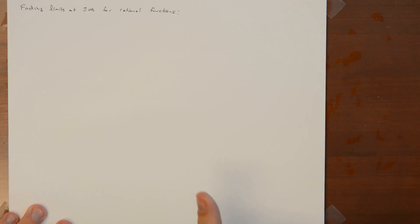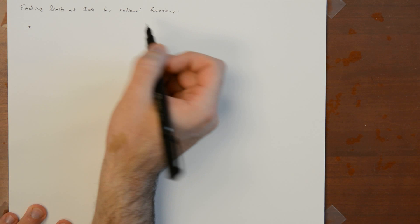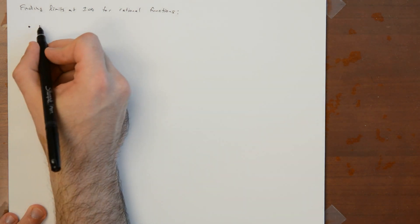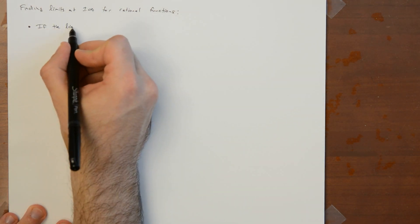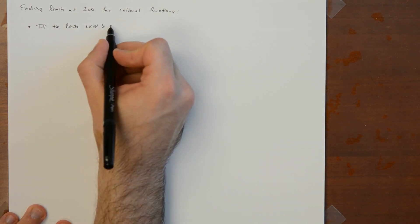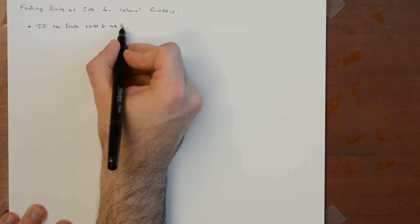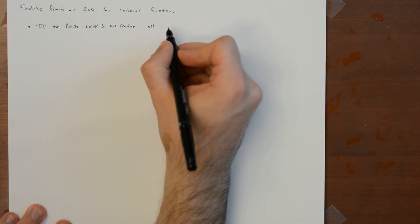Remember, the limit laws said that if two limits exist — which means that they're finite — then you can add the functions, take the limit of the sum as the sum of limits, and so on. So as long as limits at infinity exist and are finite, all the limit laws still work.